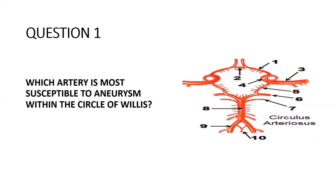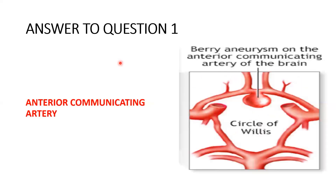Let's look at the answer. The answer is the anterior communicating artery. More often than not, aneurysms occur within this part of the Circle of Willis — the anterior communicating artery is most susceptible to aneurysms.